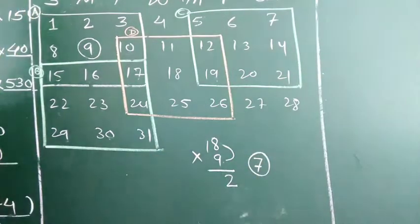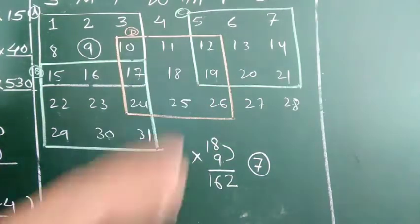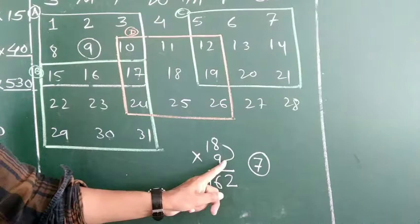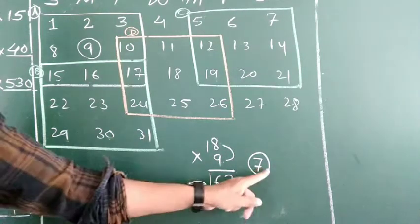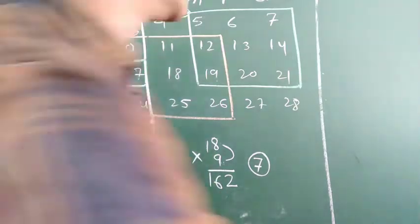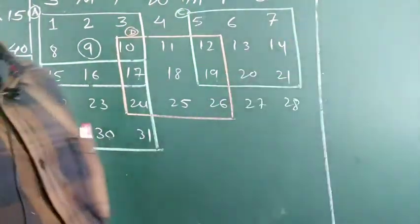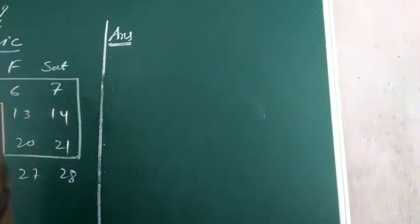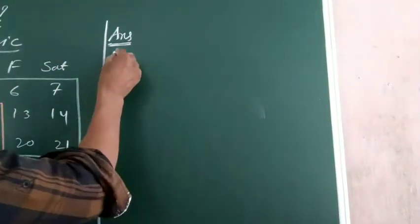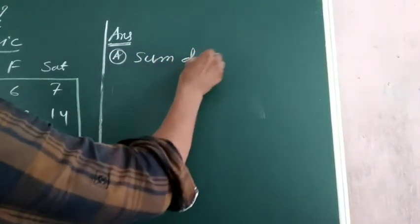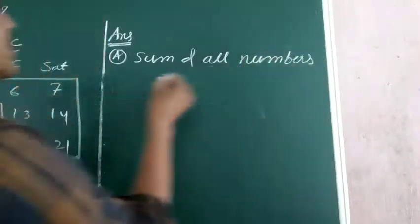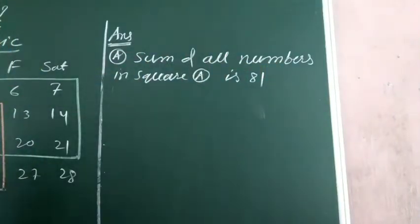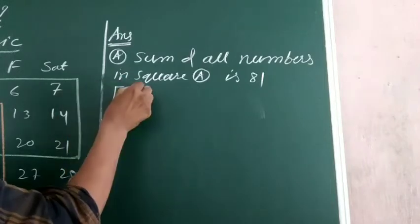8 into 9 is 72, carry 7; 9 ones are 9 plus 7 is 16 — so it is 162. Now let me write the answers. Sum of all numbers in square A is 81 — because in square A the number in between is 9, and total numbers are 9, so their product is 9 into 9 equals 81.